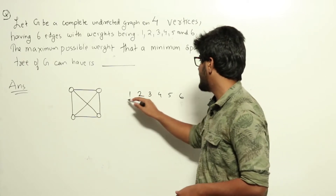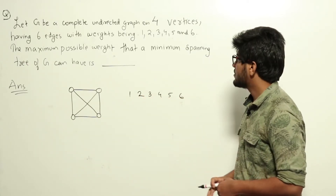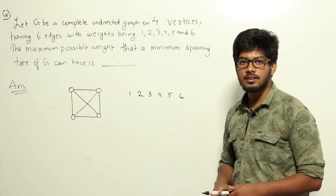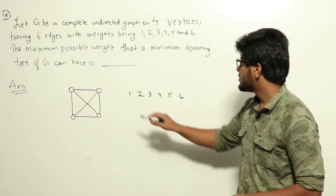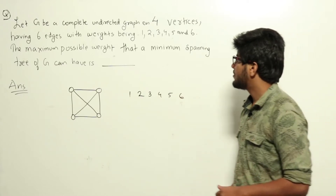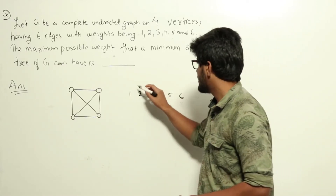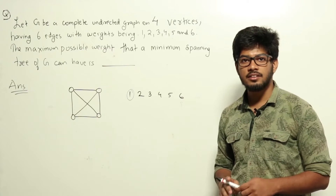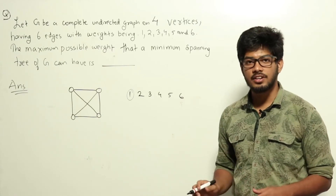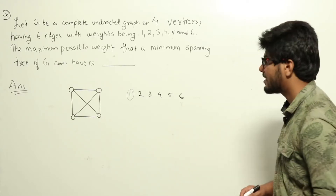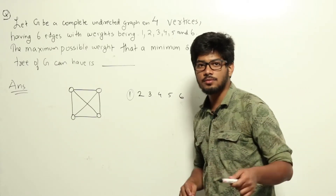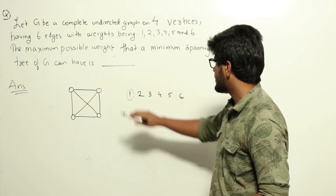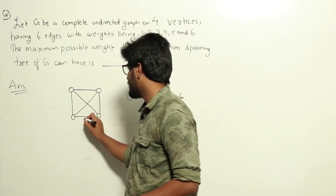Let us sort the edge weights in ascending order. We are applying Kruskal's algorithm to find the minimum spanning tree. After sorting, Kruskal's algorithm will choose the smallest edge, which is the edge of weight 1. That edge will be added to the minimum spanning tree unless it connects two vertices already in the computed MST. The first edge is always selected — let's say edge 1 is this edge here.